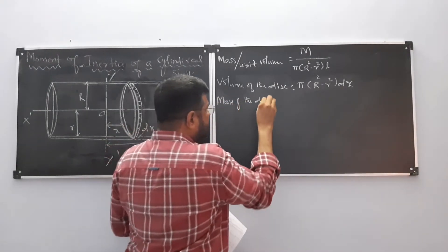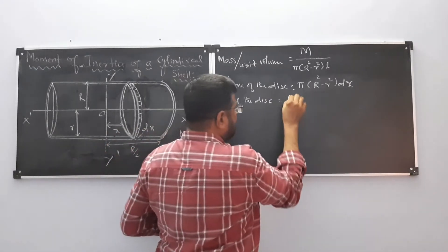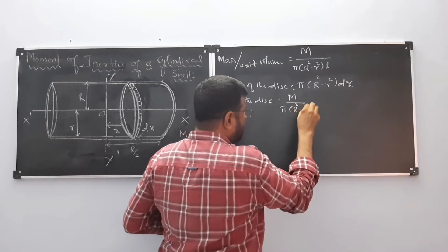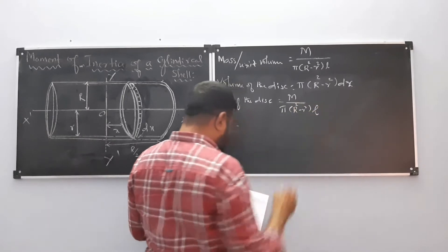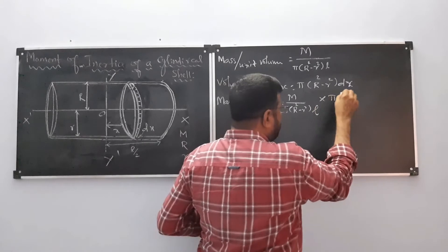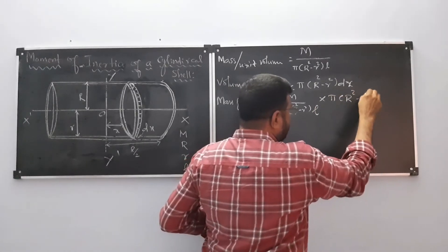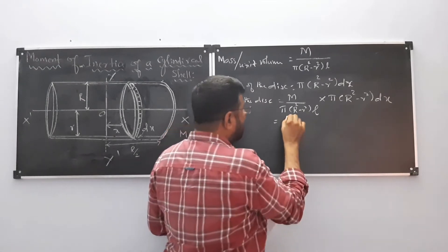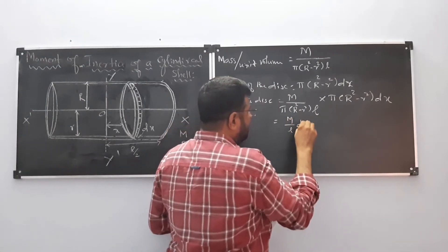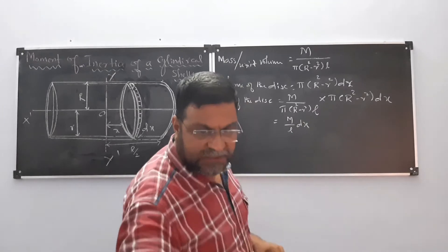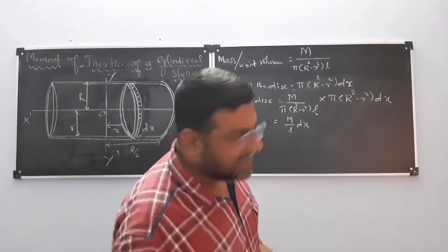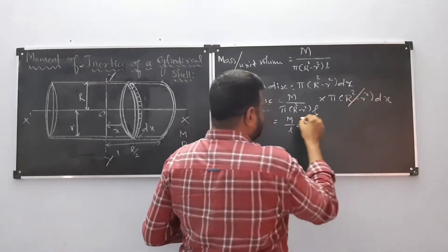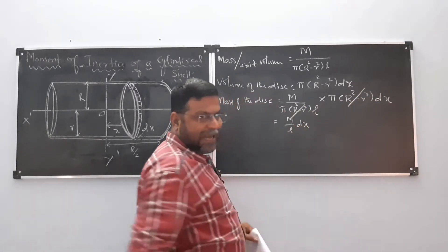Now the mass of the disc is equal to M divided by π(R² − r²)L, multiplied by π(R² − r²)dx. The π(R² − r²) terms cancel, giving mass of the disc equal to (M/L)dx.